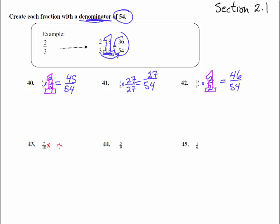Down here on the bottom, 18 times something is going to equal 54. So we've got to look and make sure that we have 18 times, oh that's what happened up here, 18 times 3. So this is going to be a 3 and a 3, 7 times 3 is 21. So 21 over 54.